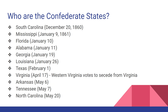The Confederate states are South Carolina, Mississippi, Florida, Alabama, Georgia, Louisiana, Texas, Virginia, Arkansas, Tennessee, and North Carolina, along with New Mexico Territory and Indian Territory (present-day Oklahoma). Western Virginia voted to secede from Virginia, and the state of West Virginia was born during the Civil War.